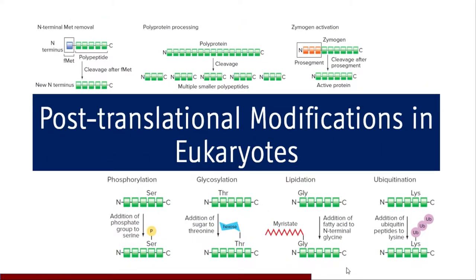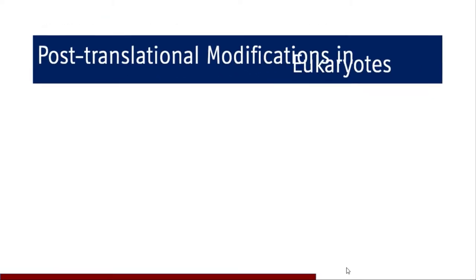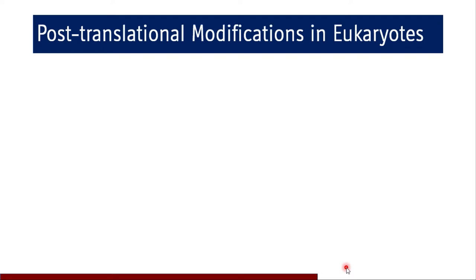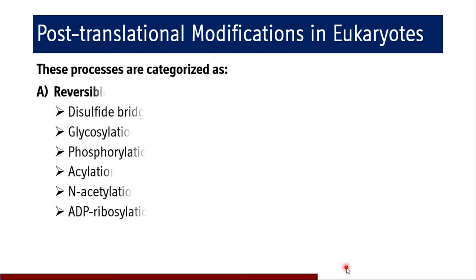What are the post-translational modifications in eukaryotes? These processes are categorized as reversible or irreversible. Under reversible, there are mechanisms like formation of disulfide bridges, glycosylation, phosphorylation, acetylation, N-acetylation, and ADP ribosylation. These reactions occur to the protein and result in post-translational modifications that are reversible.